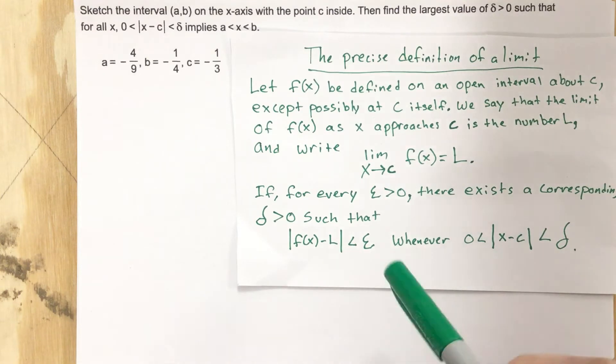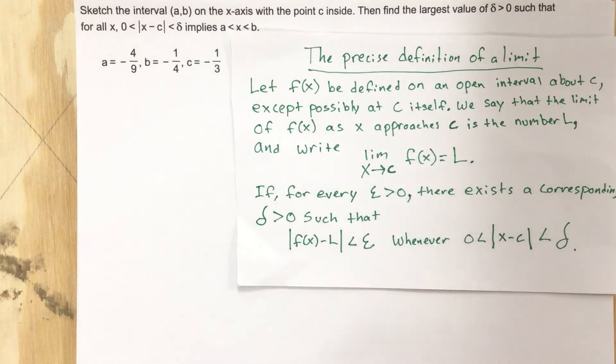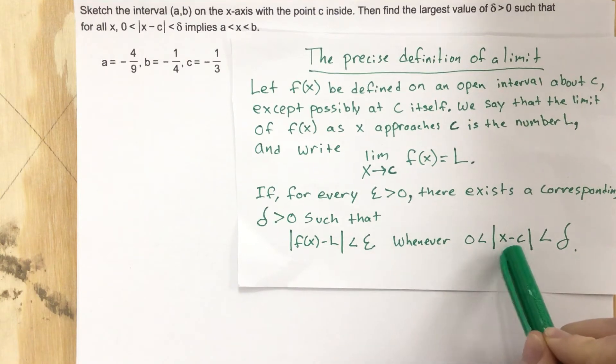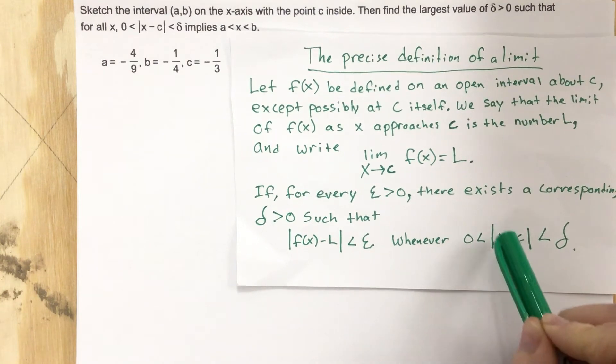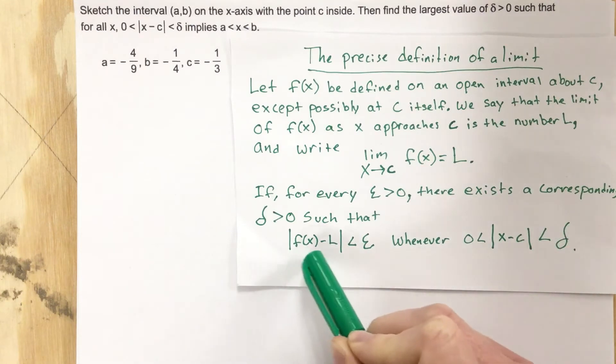In this whole section we're going to be talking about the precise definition of the limit. If you look at this bottom line in our definition, you're going to have some x values that are going to need to be less than a certain tolerance. So this delta is just like a tolerance. You're going to have some x values that have to be less than a certain tolerance in order to produce y values, that's what f(x) is and the limit.